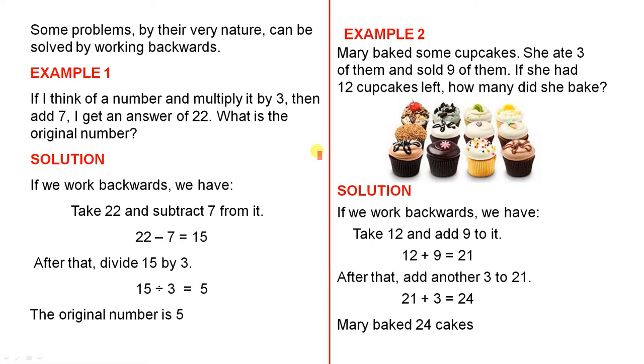Now, let's look at the solution. If we work backwards, we have, now originally it says I add 7. Because we're working backwards, remember, and the answer we got was 22, so we're working backwards. So we take 22 and we subtract 7 from it. So 22 minus 7 equals 15.